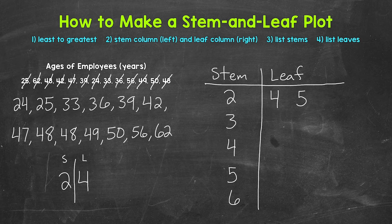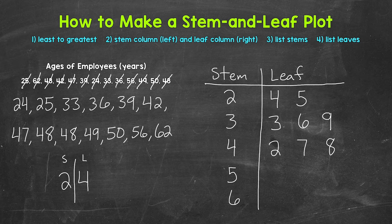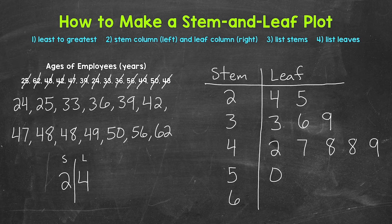Next, 33 — we move down to the stem of three, leaf of three. Then 36: stem of three, leaf of six. Then 39: leaf of nine. Now 42: move down to stem of four, leaf of two. Then 47: leaf of seven. Then 48: leaf of eight. Another 48: another leaf of eight. Then 49: leaf of nine. Now 50: move down to stem of five, leaf of zero. Then 56: leaf of six. And lastly, 62: stem of six, leaf of two.